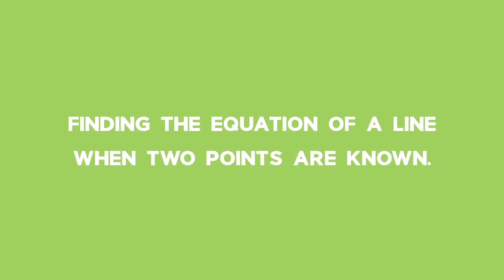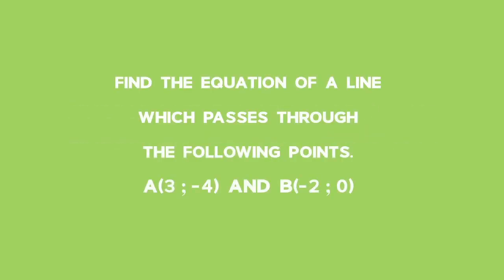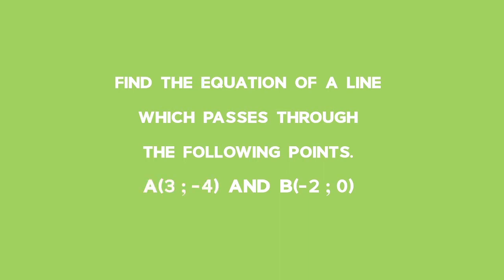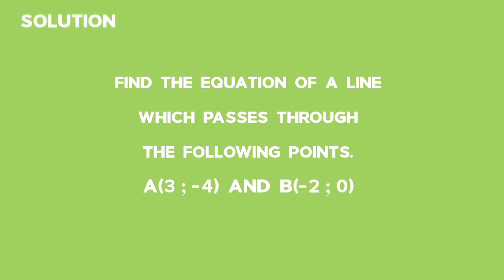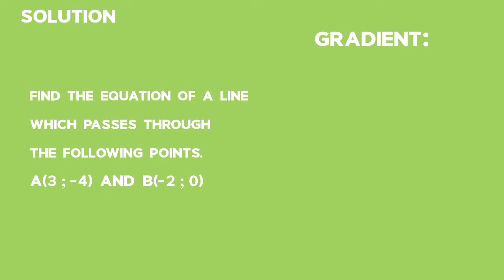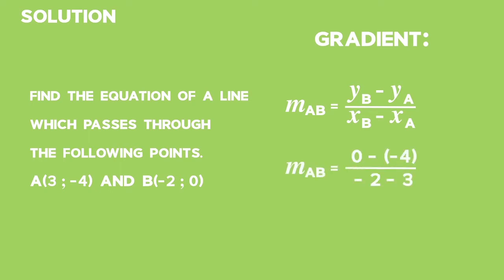Example 2: Finding the equation of a line when two points are known. Find the equation of a line passing through points A (3, negative 4) and B (negative 2, 0). We calculate the gradient: m of AB equals y_B minus y_A divided by x_B minus x_A, which equals 0 minus negative 4, all divided by negative 2 minus 3. This equals negative 4 fifths.